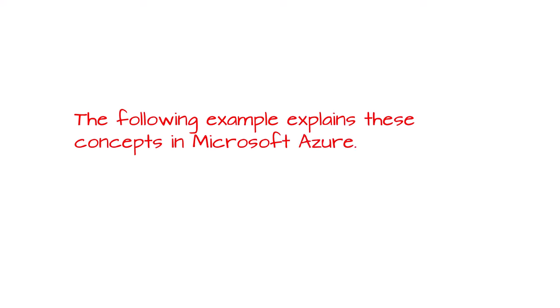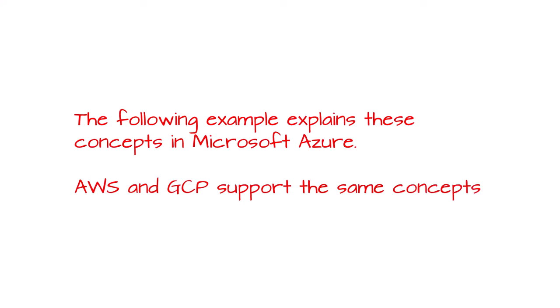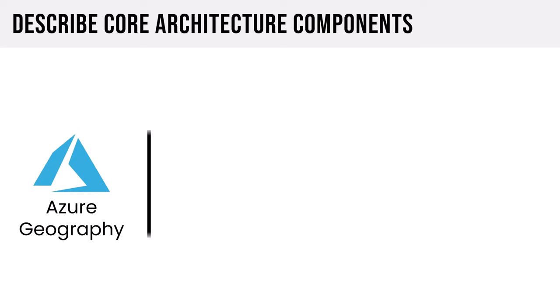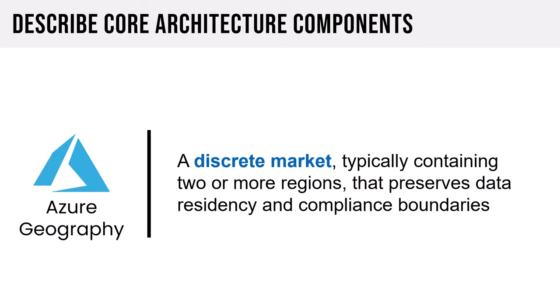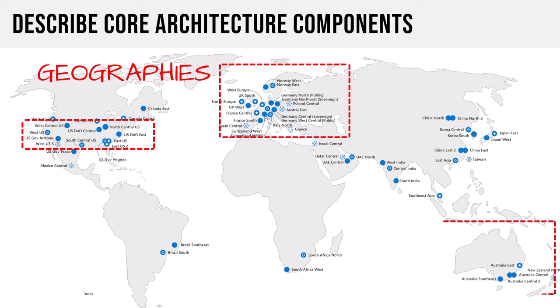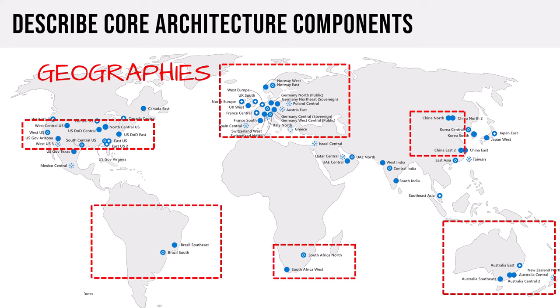Here's an example in Microsoft Azure — AWS and Google Cloud Platform support the same concepts with similar terminology. Starting at the global level: an Azure geography is a discrete market typically containing two or more regions that preserves data residency and compliance boundaries — North America, Europe, Australia, China, Africa, South America. A region is a set of data centers deployed within a latency-defined perimeter connected through a dedicated regional low-latency network, with regions all around the globe including Japan East, UAE North, West Europe, Canada Central, and US regions.